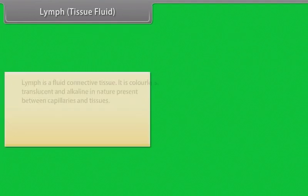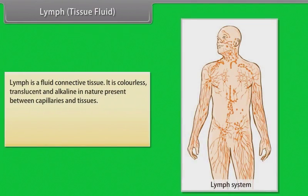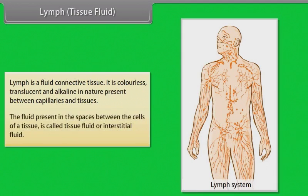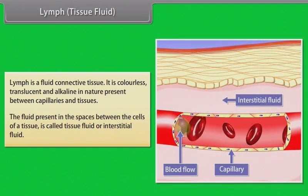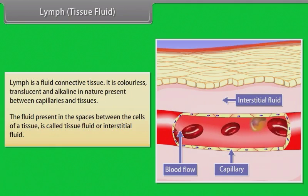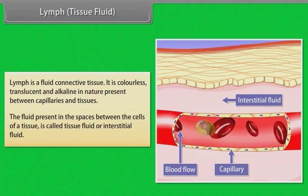Lymph is a fluid connective tissue. It is colorless, translucent and alkaline in nature, present between capillaries and tissues. The fluid present in the spaces between the cells of a tissue is called tissue fluid or interstitial fluid.